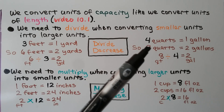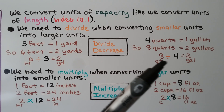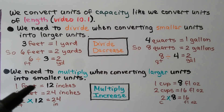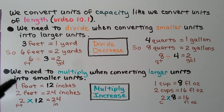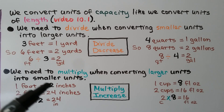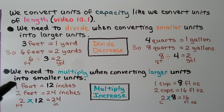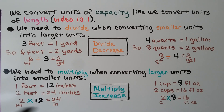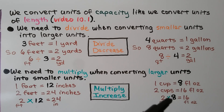Four quarts equals one gallon, so eight quarts divided by four equals two gallons. And we multiply when converting larger units into smaller units — think: multiply and increase. One foot equals twelve inches, so two feet times twelve equals twenty-four inches. Similarly, one cup is eight fluid ounces, so two cups times eight equals sixteen fluid ounces.